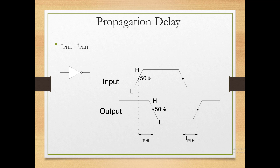Now let's discuss propagation delay. Consider an inverter: when the input goes from 0 to 1, the output should go from 1 to 0. When input is 0 the output is 1, and vice versa. However, when you make the input go from 0 to 1, the output does not immediately change — it changes after a small delay. This delay is called propagation delay: after giving an input signal, how long before the effect appears at the output.